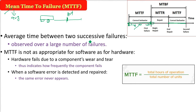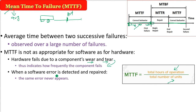MTTF is not very appropriate for software, as these metrics are mainly made for hardware. You can calculate it as the total number of hours of operation divided by the total number of units. Hardware fails due to environmental conditions, wear and tear, and many other reasons. Every hardware component has to fail sometime — there is no immortality. This indicates how frequently the component fails.